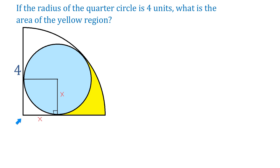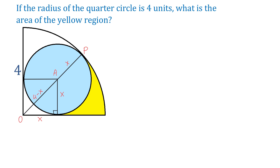Now let's connect the center of the quarter circle with this point of tangency. Because these two circles are internally tangent, this line will pass through the center of the blue circle. Let this point be O and this one P. Then the line segment OP is 4 units because this is the radius of the quarter circle. Let the center of the blue circle be A, so AP equals x and AO equals 4 minus x. And let this point be B and this one C.